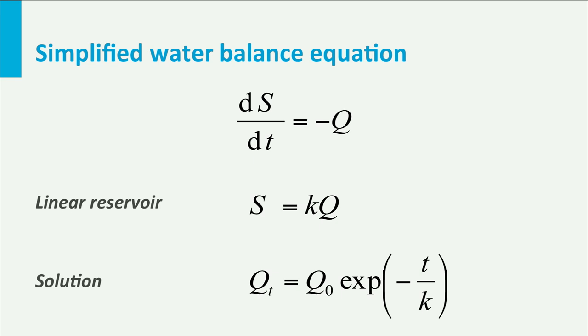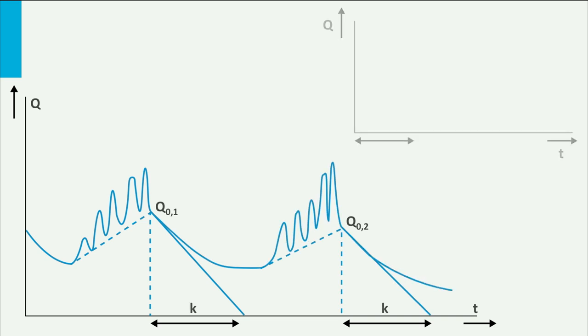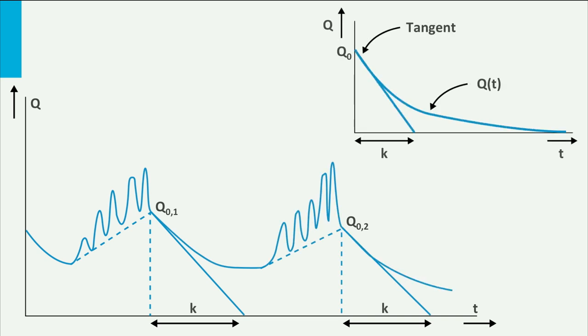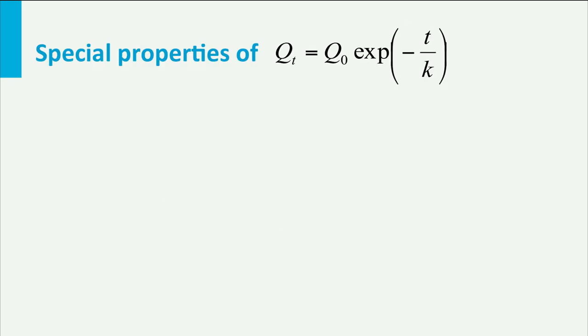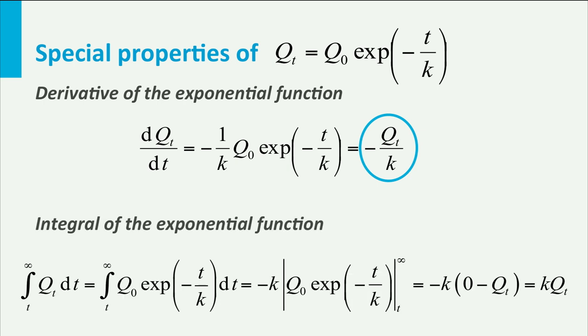Please see the example and do it yourself. One can easily recognize the residence time k from the graph, because it is the time where the tangent to the curve hits the time axis. Here you see this illustrated. The exponential function has special properties. The time derivative of q equals minus q over k. And the integral of q, being the remaining groundwater storage, is k times q. Check it yourself.